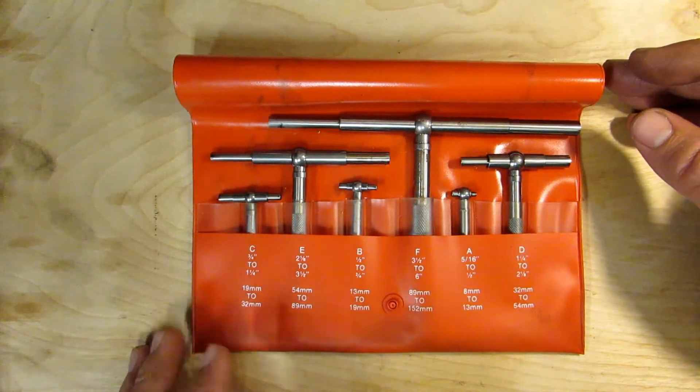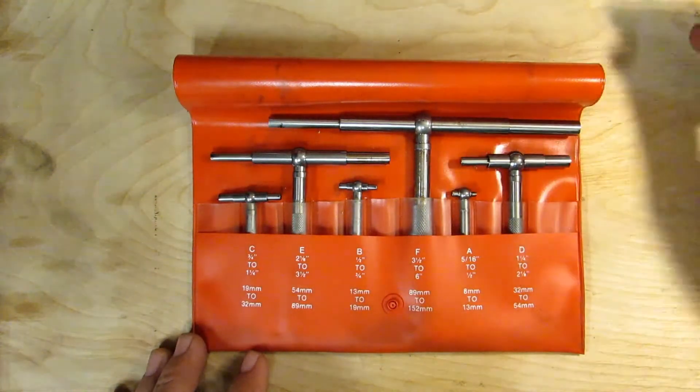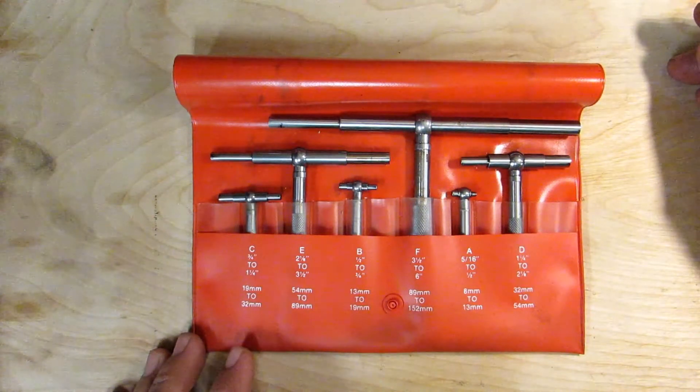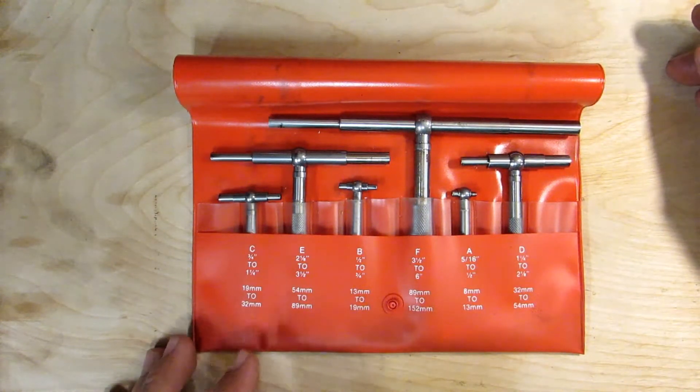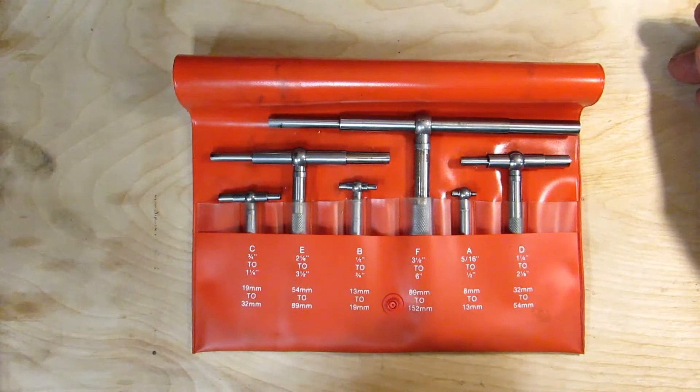To give you a little reference, this is a Starrett set. A brand new set of Starrett telescoping gauges is about $300, but I got this one used on eBay for about $50 and it showed very little use.